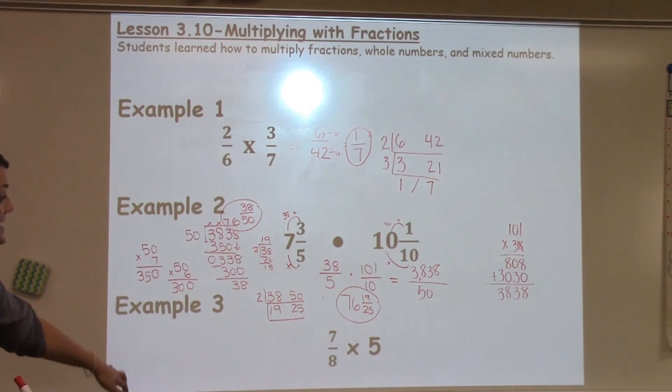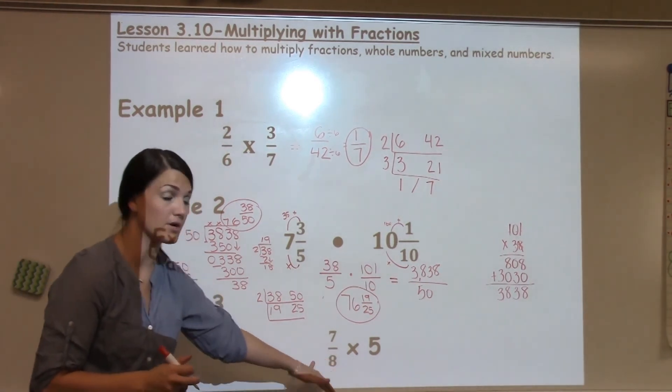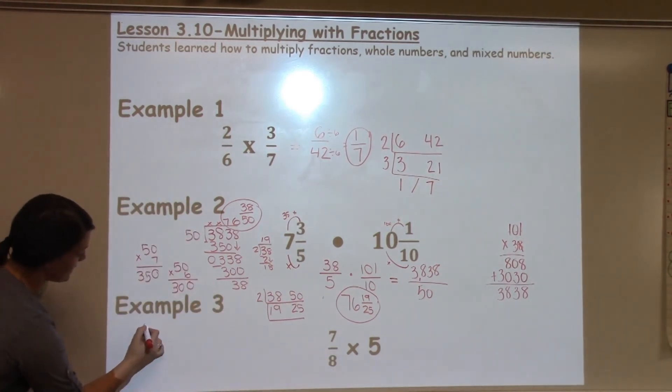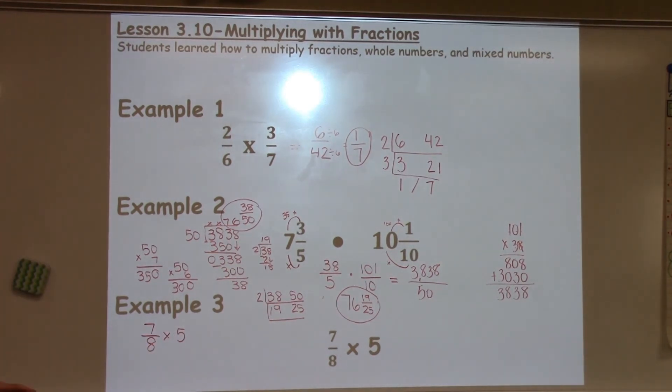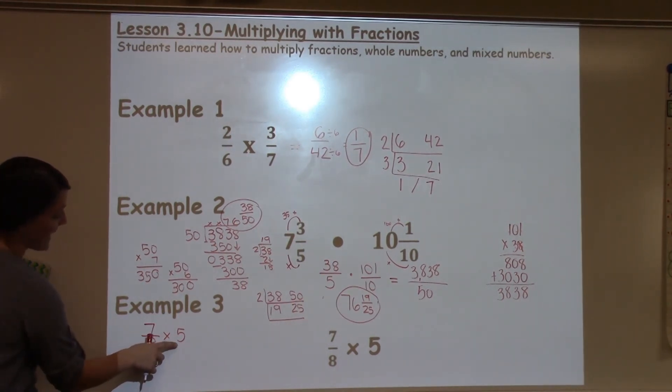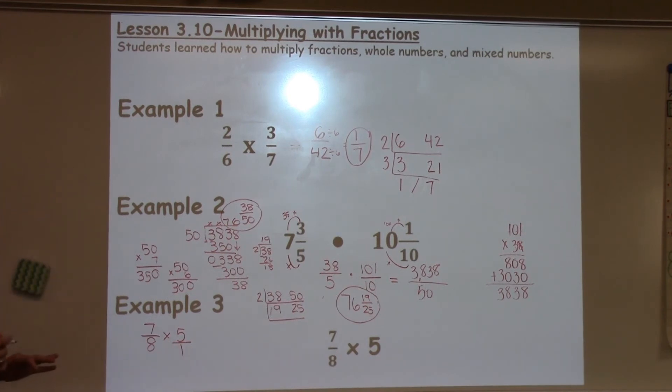The last example is a fraction times a whole number. And I'm going to move this problem over here just so we can focus on it a little bit more. So I've got 7/8 times 5. The only thing that you have to do when multiplying by a whole number is put that whole number over 1 and make it look like a fraction.